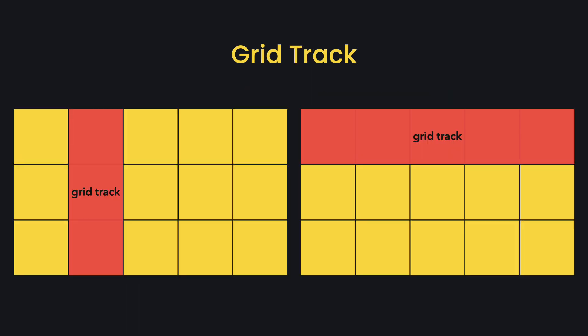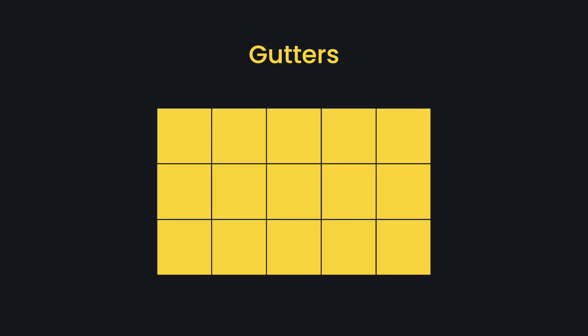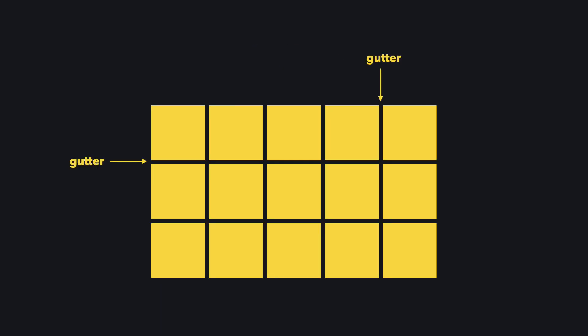The space between two adjacent grid lines is the grid track, which is basically the columns and rows. Grid tracks can also be separated by a gutter to add a space between the grid's cells, which refers to a single unit defined by where the grid row and column intersect.